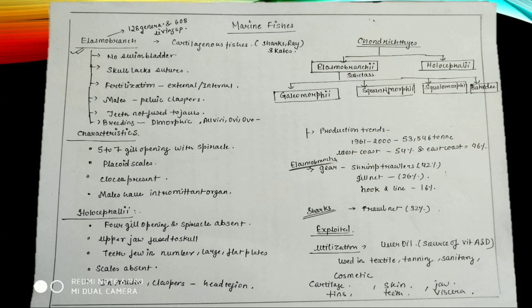There are altogether 128 genera and 608 living species of Elasmobranchii under cartilaginous fishes, where sharks, rays, and skates are under these classes. These are non-swim bladder, means they are not having swim bladder. The skull lacks sutures.